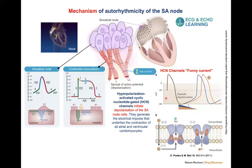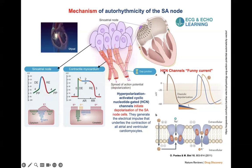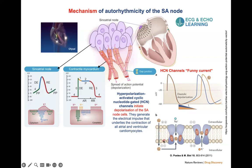Let's delve into the autorhythmicity of the SA node. The action potential in the SA node differs from that in the ventricles and atria. One reason the SA node cells are capable of firing is due to the presence of HCN channels — also known as funny channels, named for their peculiar behavior. HCN stands for hyperpolarization-activated cyclic nucleotide-gated channels. They initiate depolarization of the SA node cells and generate the electrical impulse underlying the contraction of all atrial and ventricular cardiomyocytes. These funny channels get activated at hyperpolarization.